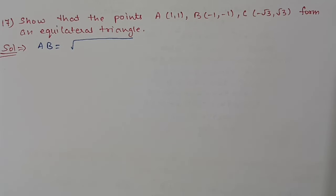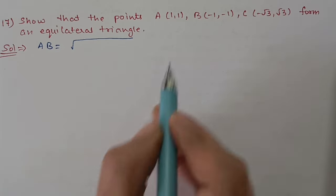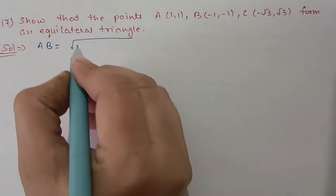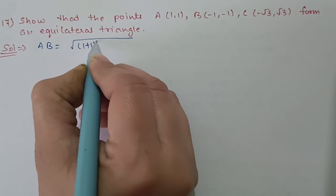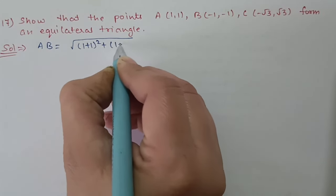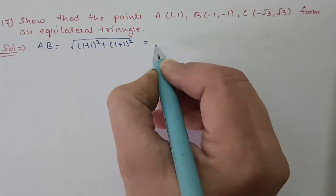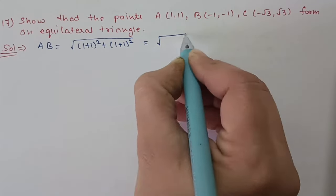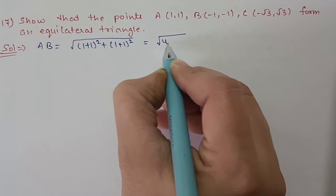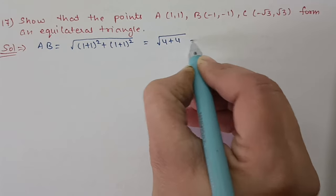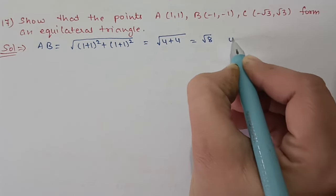Question number 17: Show that the points A, B and C form an equilateral triangle. We find all three sides using the distance formula. First, AB = √((1−(−1))² + (1+1)²) = √(4+4) = √8 units.